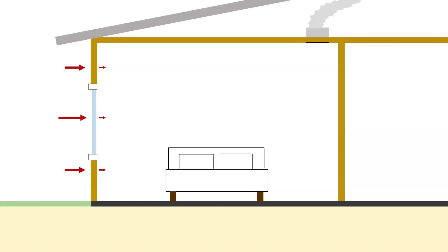The air comes out of the supply grill, is directed along the ceiling towards the exterior wall, then goes down the wall, mixing with the warm air and cooling it down. Then eventually it makes its way back to the return.